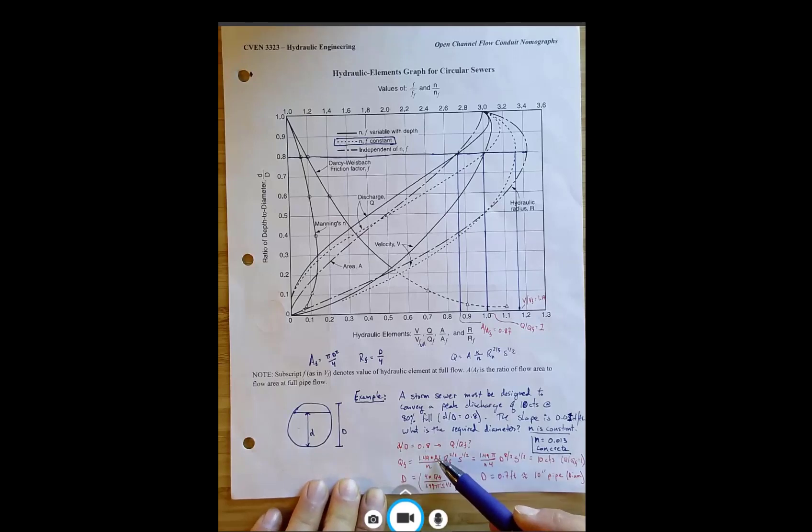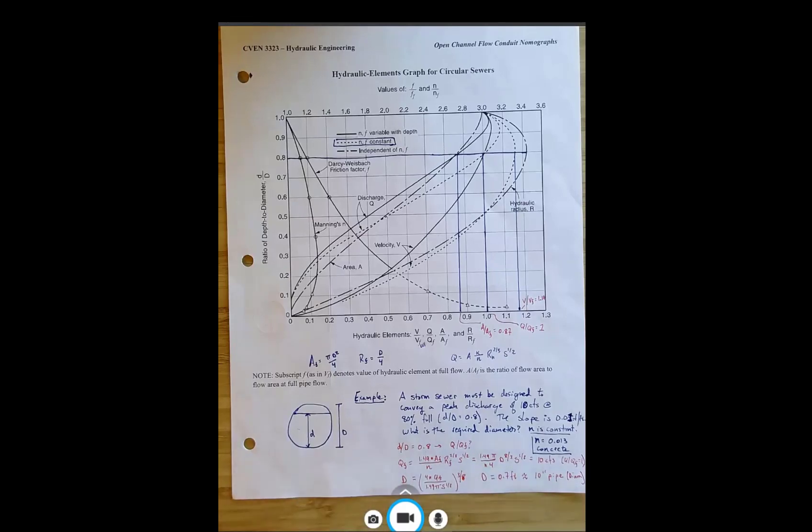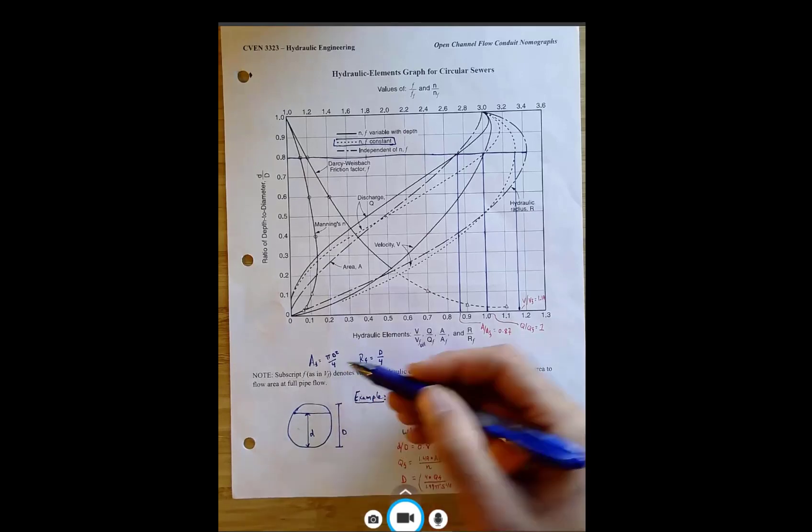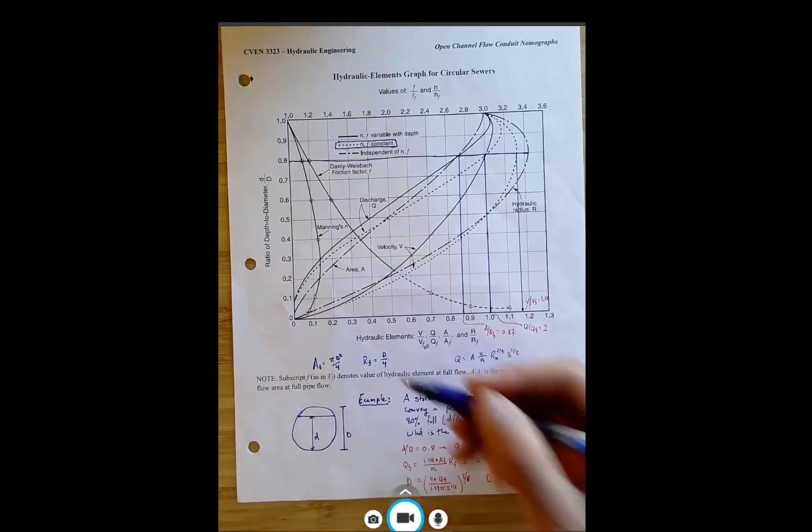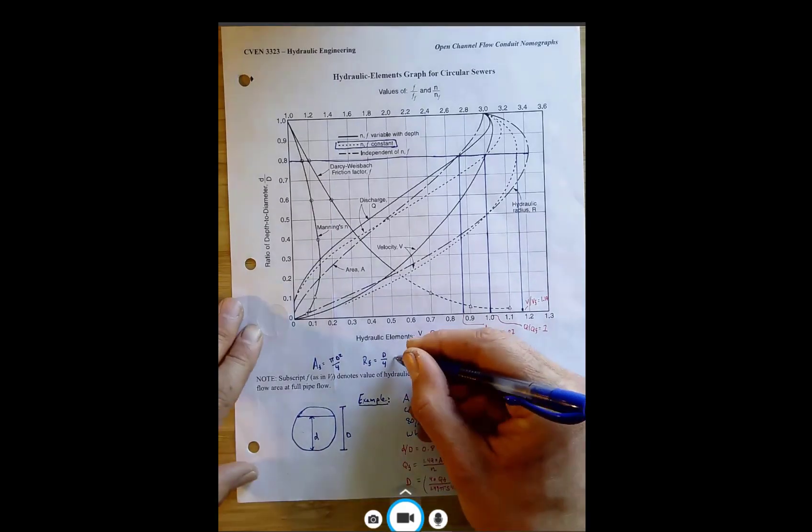Area is going to be a function of diameter, right? So area is going to be pi d squared over 4. And then hydraulic radius is actually area divided by a wetted perimeter, and when the pipe is full, the wetted perimeter is the circumference of the pipe, which is just pi d. So we divide the area by the circumference of the pipe, we get d over 4 for the hydraulic radius, which is equal to a over the wetted perimeter.